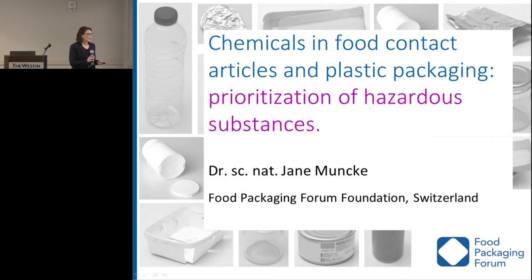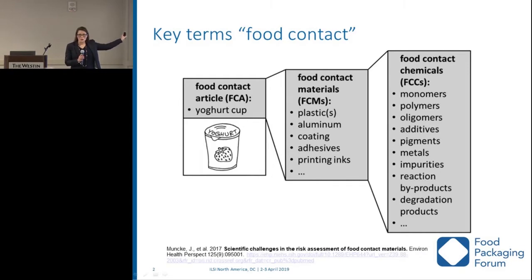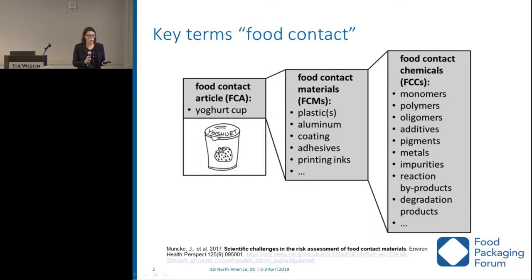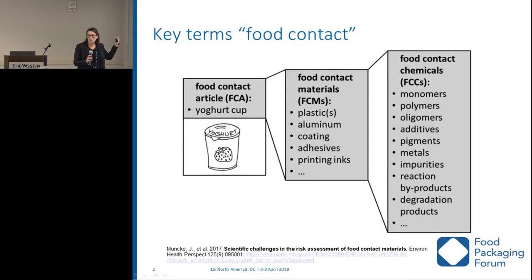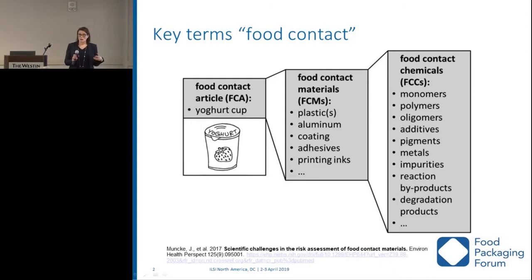Just to be clear on the terms I'm using: we all know what a food contact article is — it's the finished packaging, the conveyor belt, the tubing, the article intended to come in contact with food. Oftentimes this term is mixed up with food contact material. The materials are actually those used to make a food contact article, and food contact articles can consist of many different materials. What I'm going to be talking about mostly are food contact chemicals — the chemical components of food contact materials and food contact articles.